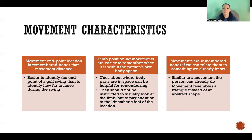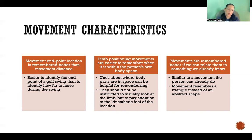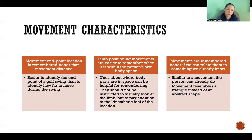To estimate distance, we tend to count or use different mechanisms to try and estimate distance more accurately. Limb positioning movements are easier to remember when within the person's own body space. When we give cues about where our body parts are in space, that helps us remember. If you're coaching someone and give cues like 'lift your elbow' or think about where your elbow is in relation to your shoulder, giving those sorts of cues helps the person remember where their limbs are positioned in space relative to other parts of their body or their environment.